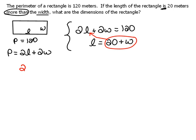So now we can say twice, instead of L, we can use 20 plus W, because that's what L is. Plus 2W equals 120. And now we can distribute and solve. So 40 plus 2W plus 2W equals 120.